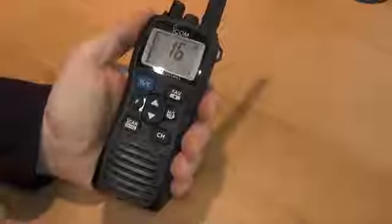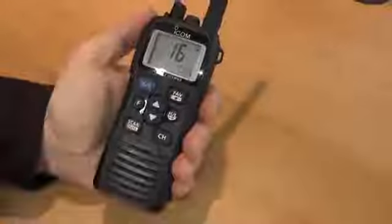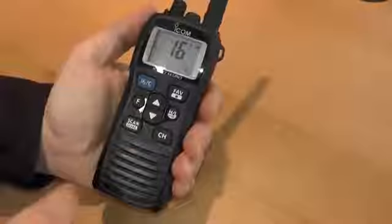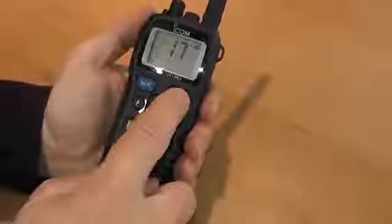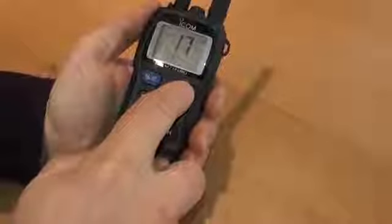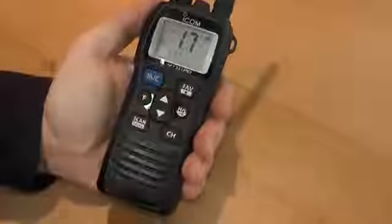You've got a favourites button here and what that does is it gives you a little star at the top corner of the channel that you're on. A press of that favourites button or press and hold of that favourites button will turn that star on and off on the channel that you're on.